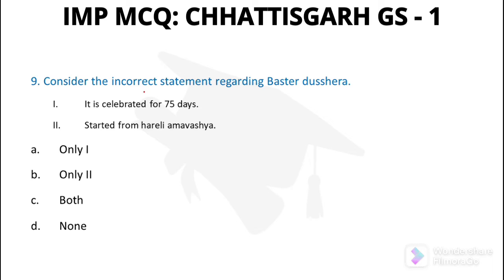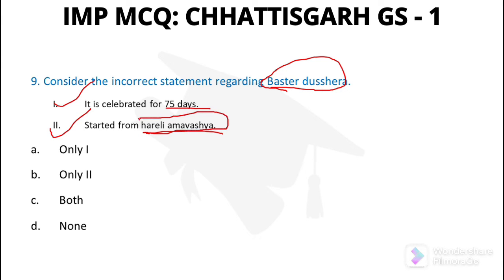Question number 9: Consider the incorrect statements regarding Bastar Dussehra. It is celebrated for 75 days, started from Harili Amavasya. Both these statements are actually correct. Since we were asked for incorrect statements, the answer is option D — none.